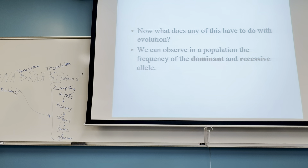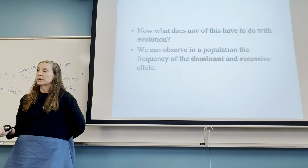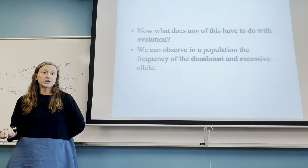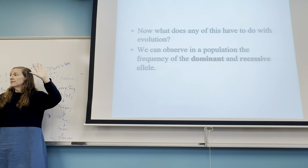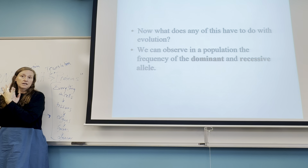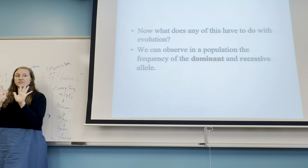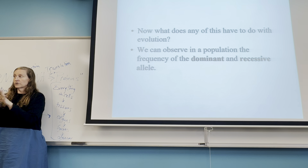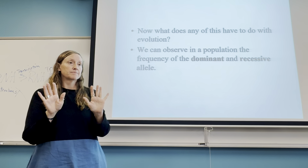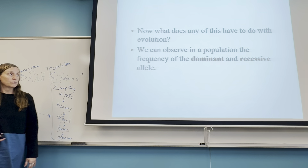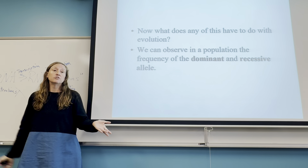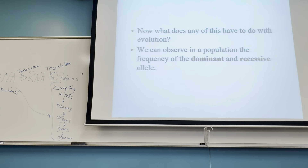What does genetics have to do with evolution? We can look at the concept of complete dominance: a trait has a dominant allele and a recessive allele, and the recessive will be masked in the presence of the dominant. You can have the dominant trait with two dominant alleles or a dominant and recessive, while two recessive alleles express the recessive trait. We could track the percentage of dominant alleles — the allele frequency — over many generations to see if they change, and if they do, that shows evolution is happening.